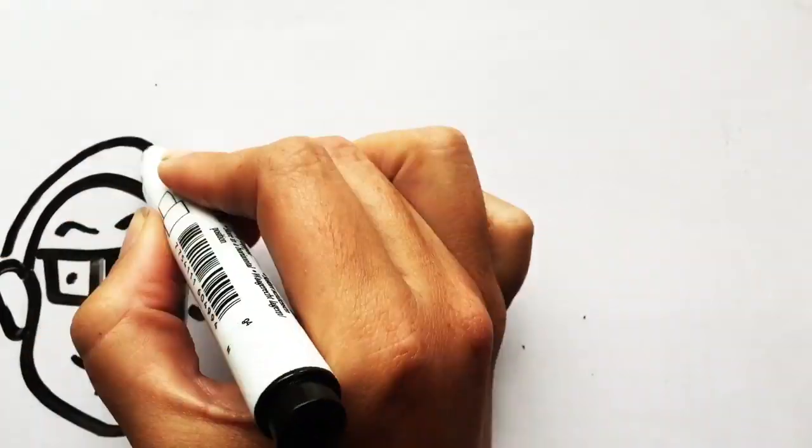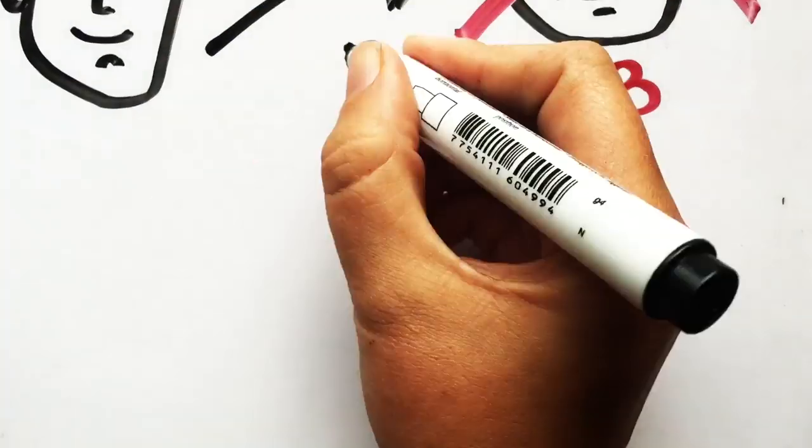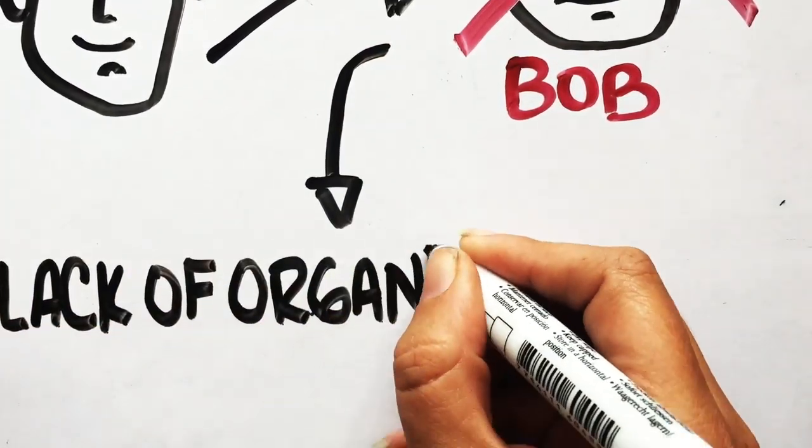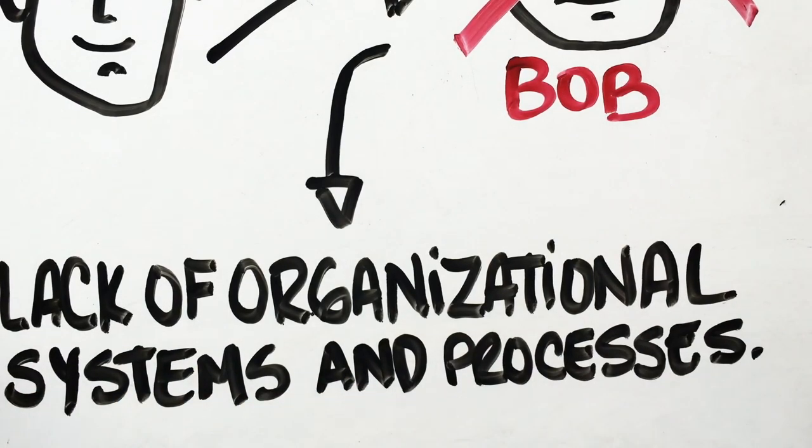Bill also did not realize that his right-hand man, Bob, was really not much of a help. Bob simply existed in the company and was unable to thrive because of the lack of organizational systems and processes.